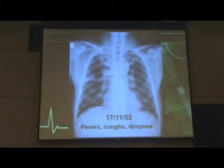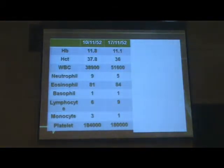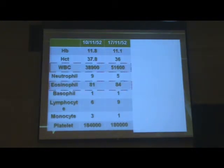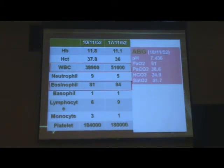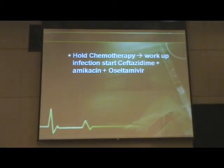A month later, he came back again with fever, cough, and dyspnea. He still had leukocytosis up to the leukemoid reaction range, persistent eosinophilia, and moderate hypoxemia. Chemotherapy was held and he was worked up for infection. Antibiotics were started and Tamiflu was also started.